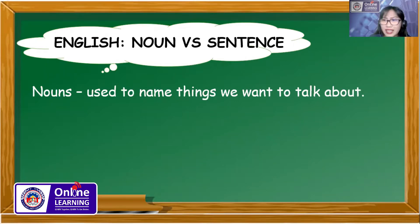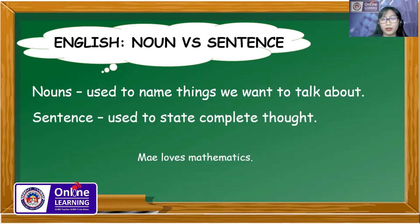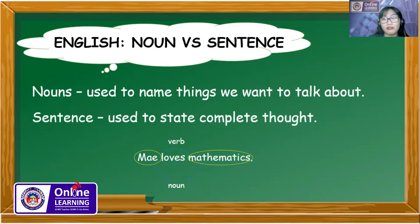How about the sentence? A sentence is used to state a complete thought. When we say a complete thought, it means there is a noun and there is a verb. For example, 'May loves mathematics.' As you observe in our example, 'May' and 'mathematics' are the nouns, and 'loves' is the verb.